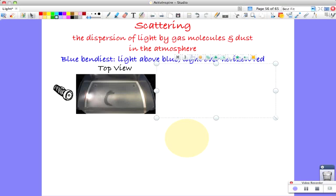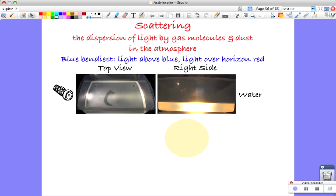...you put your eye over this side of the trough and look back at the torch. You can see the torch light quite strongly—you're just looking through water.